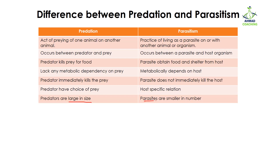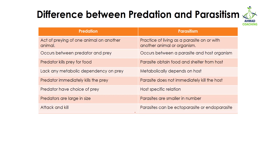Predators are large in size, while parasites are very small in size but larger in number. Predators attack and kill their prey.